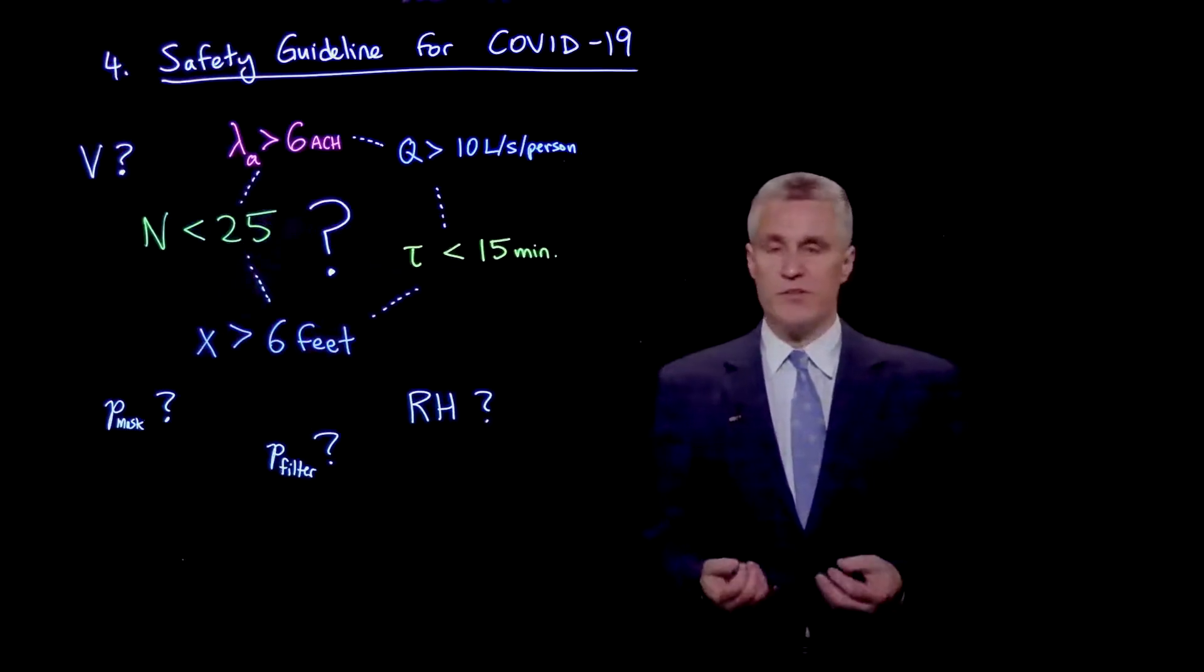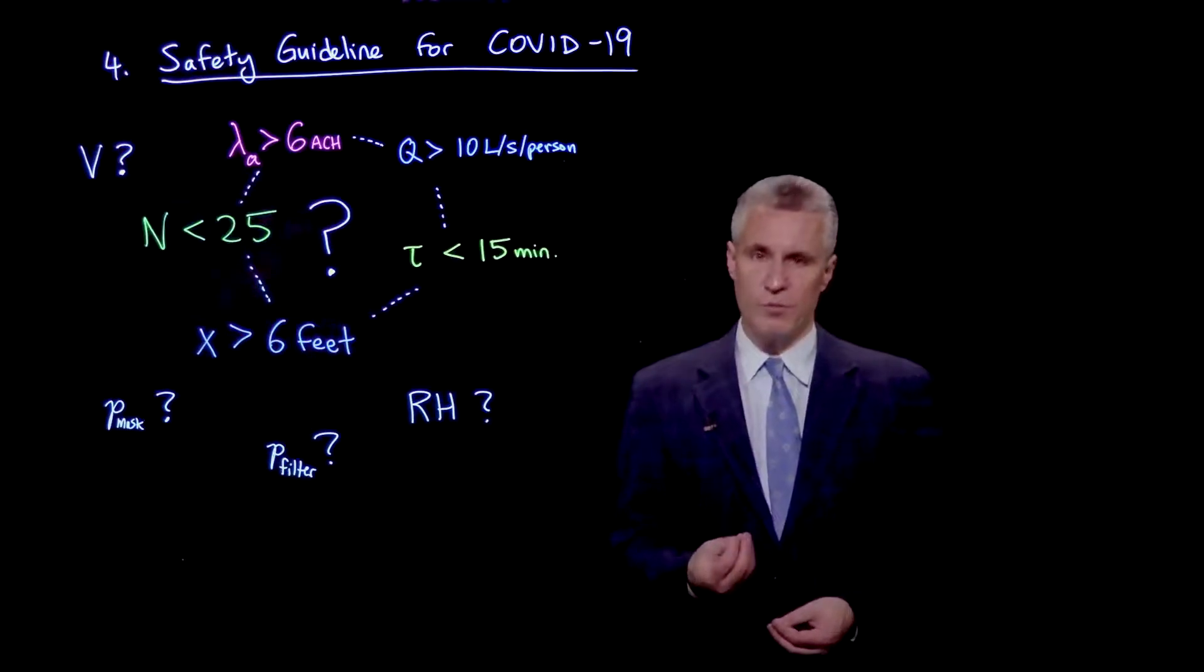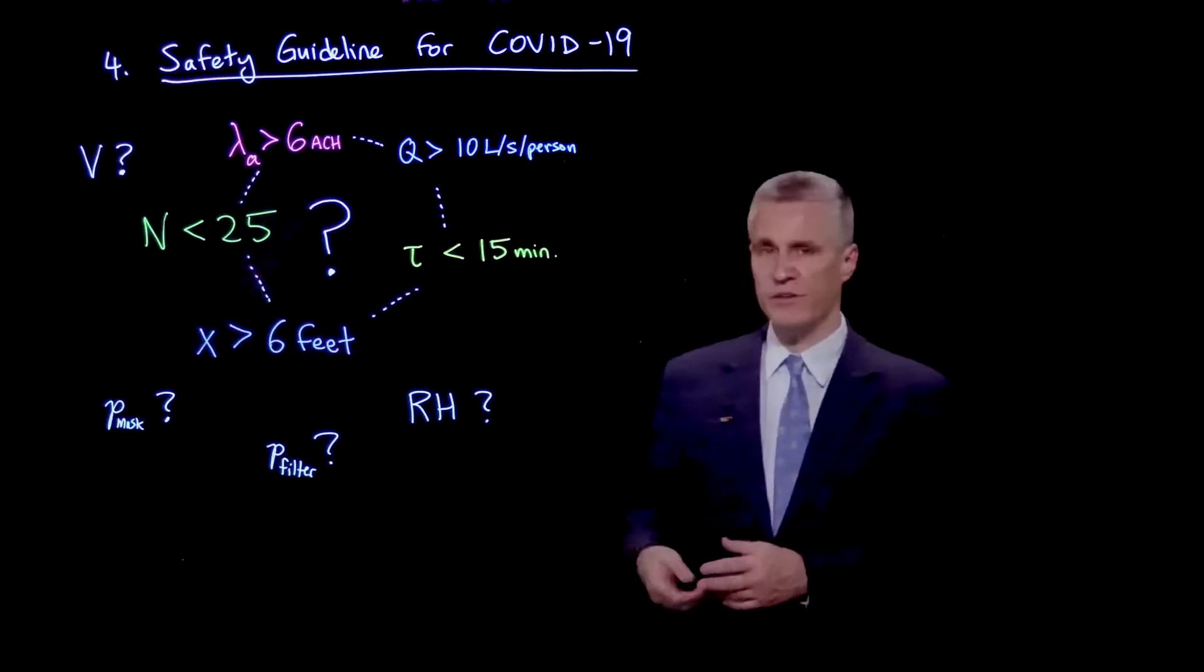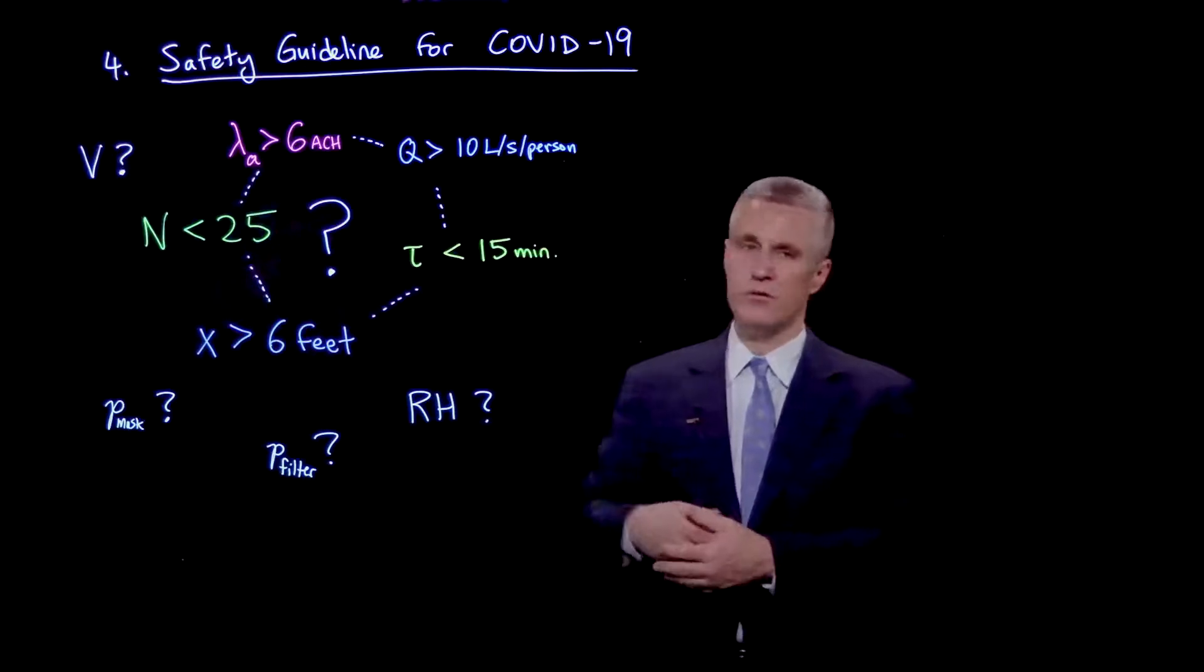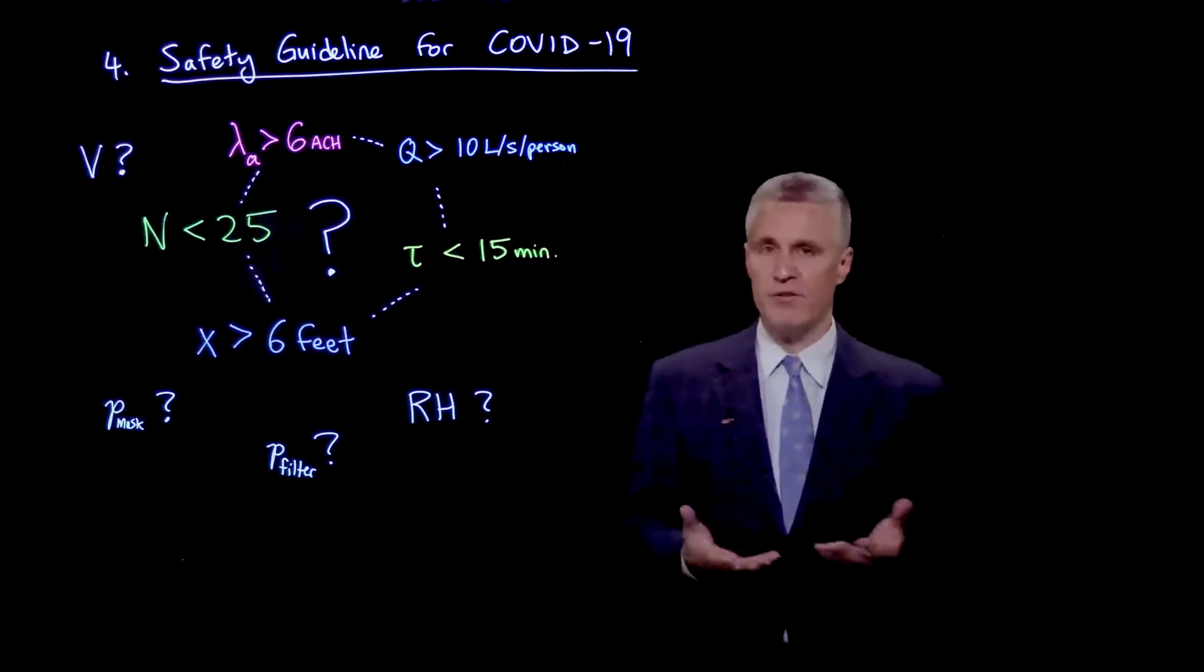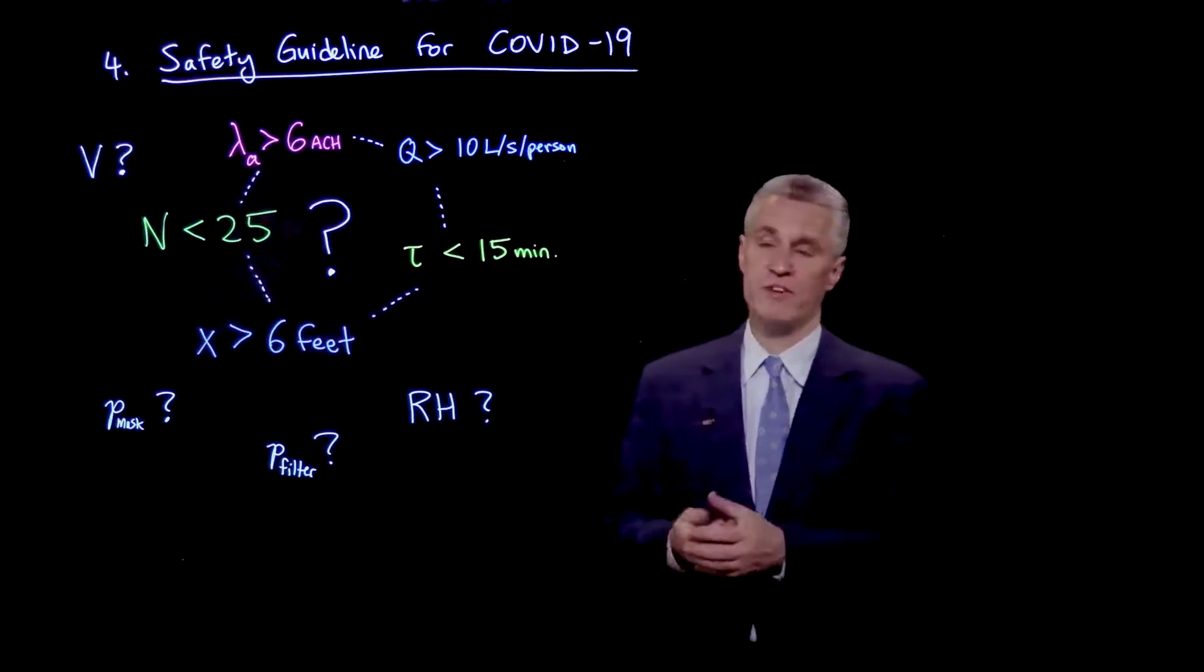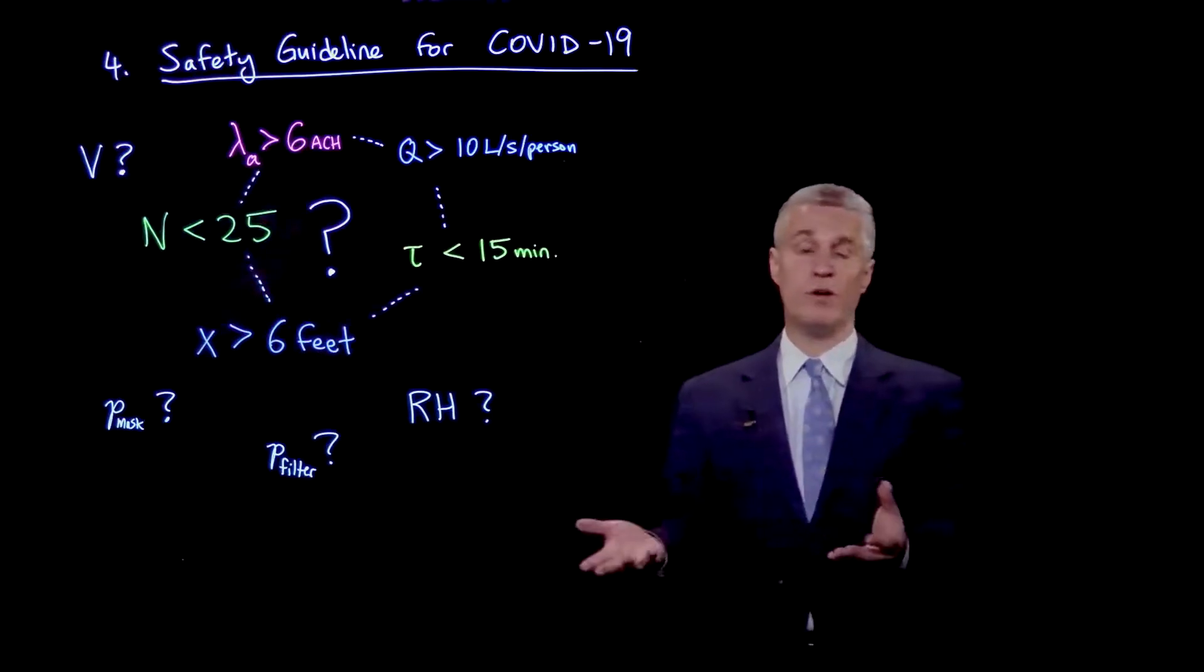Existing guidelines limit one parameter that might be important. For example, social distancing limits the spacing between people, which can be defined by the average area per occupant, to a minimum of say 6 feet or 1 meter.